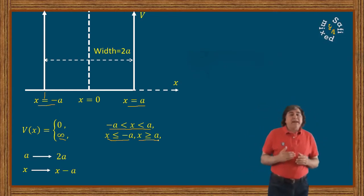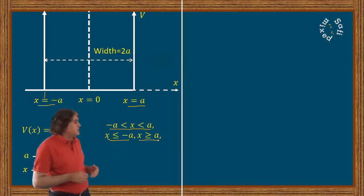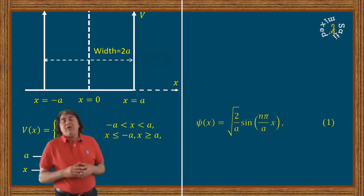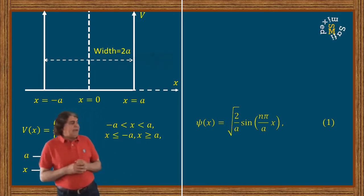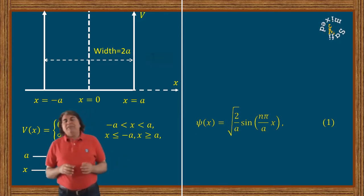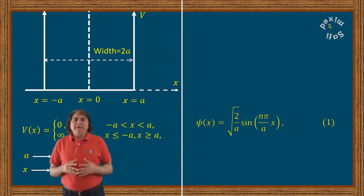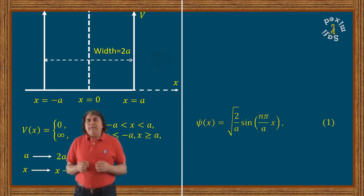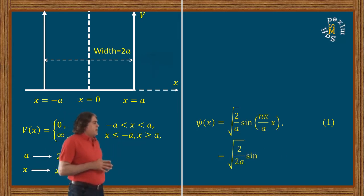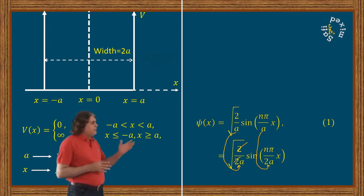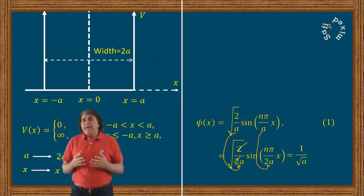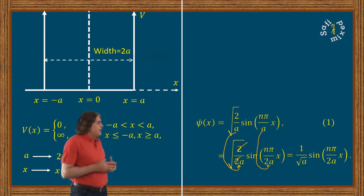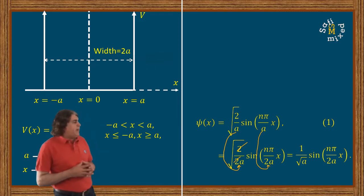The wave function of the standard potential well is given by: psi of x equals square root of 2 divided by a, times sine of n pi divided by a times x. Here a is the width of the potential, n is the quantum number, and x is the position of the particle inside the well. If we replace a with 2a, the 2s cancel inside the square root, giving 1 over square root of a, times sine of n pi divided by 2a multiplied with x.